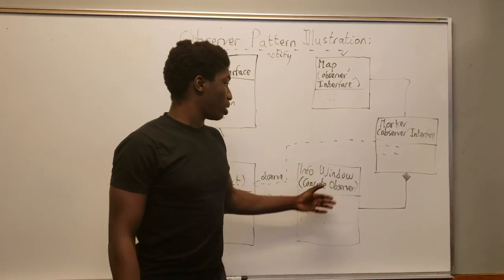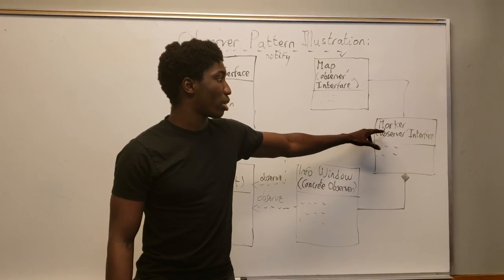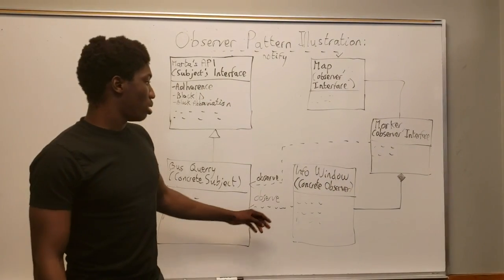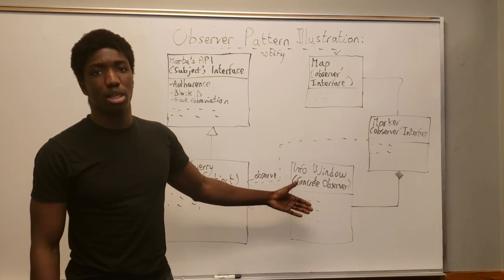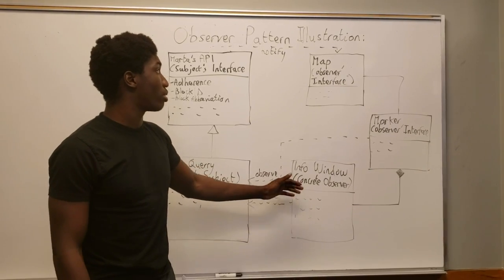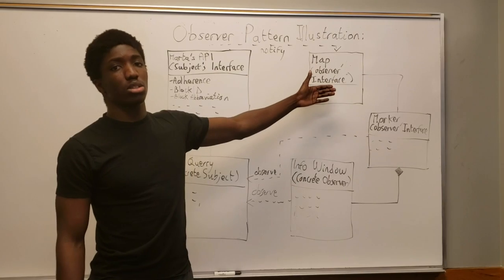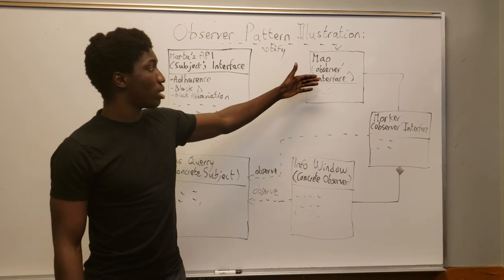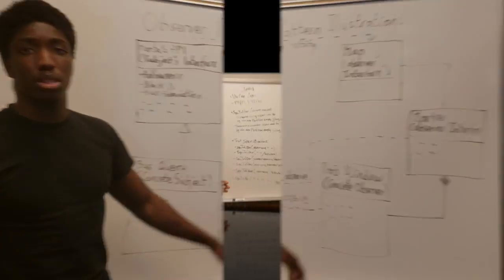So actually the info window is created from the marker observer and that's where all the coordinates and the arrival time are gonna be saved and originated from. The map observer's interface is also another one that is associated with the marker interface to create the info window.